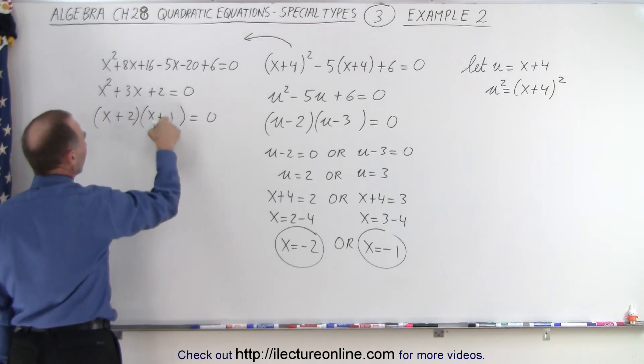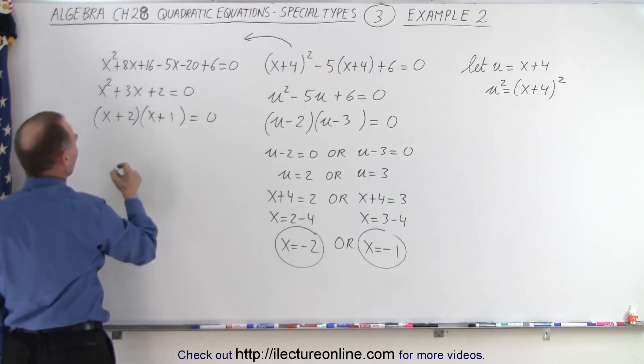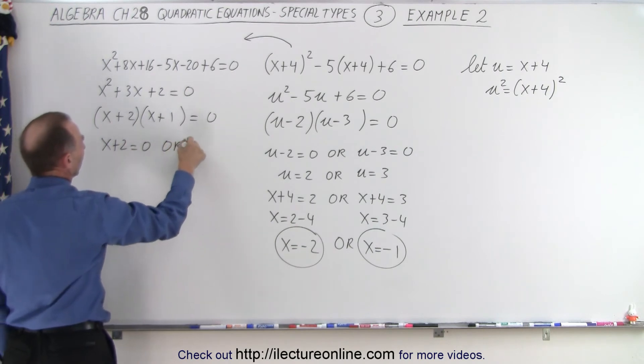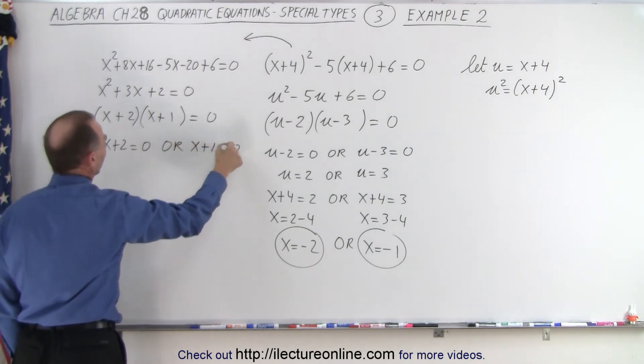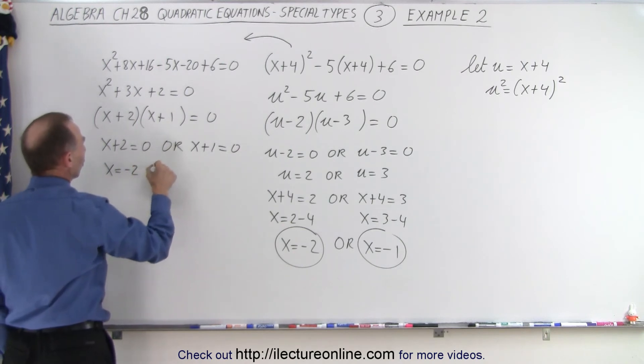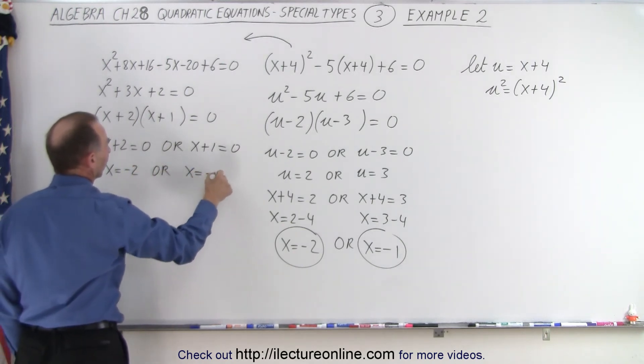So we end up with x and x, the signs are all positive, and a 2 and a 1. When I multiply, I get 2. When I add, I get 3. So that means that x plus 2 equals 0 or x plus 1 equals 0, which means that x equals negative 2 or x equals negative 1.